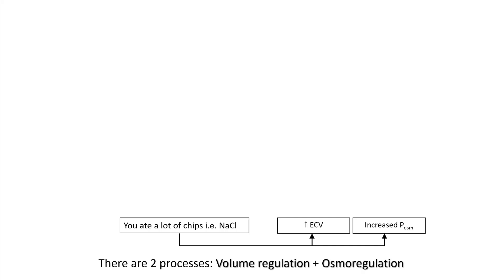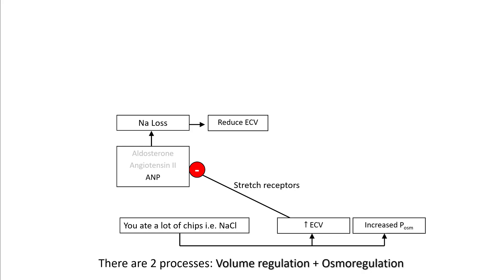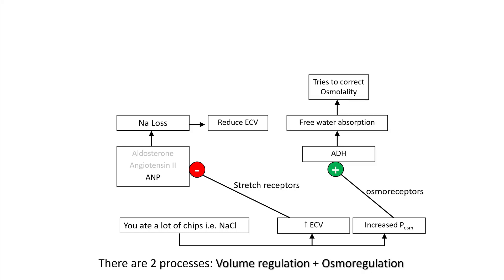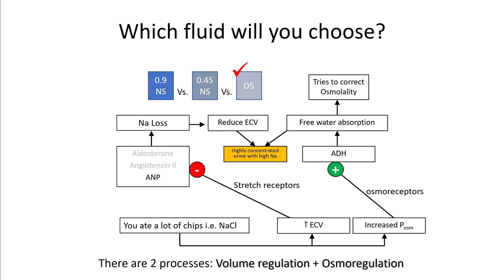Let's say you ate a lot of chips, which are rich in sodium chloride. This increases your plasma osmolality and draws fluid from the intracellular compartment. Increased ECV inhibits baroreceptors and stimulates your ANP pathway, resulting in sodium loss and reducing ECV. However, the increased plasma osmolality stimulates your ADH system, resulting in free water absorption. This produces highly concentrated urine with high sodium. In this scenario, you give D5W to drop the plasma osmolality. Dropping the osmolality moves water back into the intracellular compartment and reduces ECV. This also explains why you want to drink water and not Gatorade after eating chips. Always consider both volume regulation and osmoregulation when treating your patients.